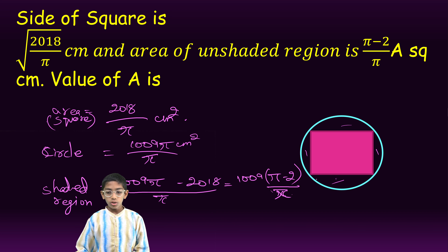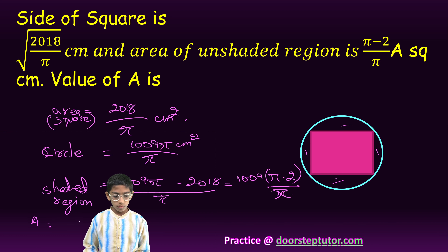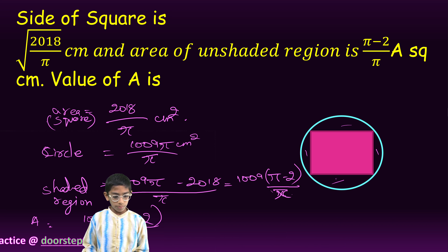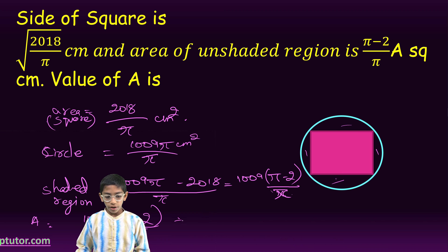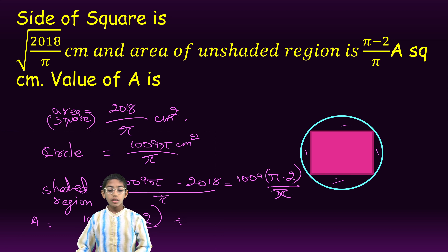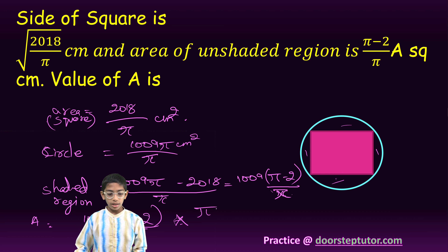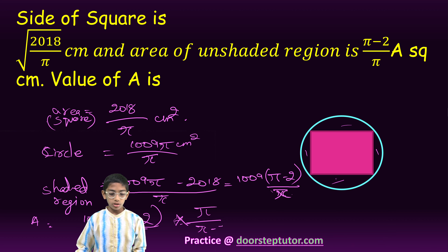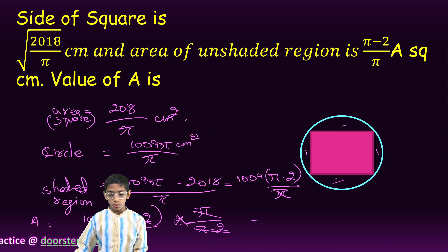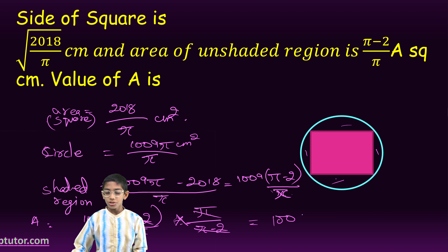Now A is equal to 1009 into pi minus 2 upon pi, divided by pi minus 2 upon pi. We can cancel all of them. So A is equal to 1009.